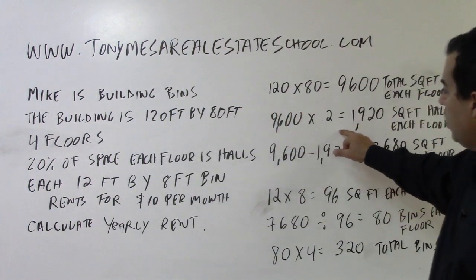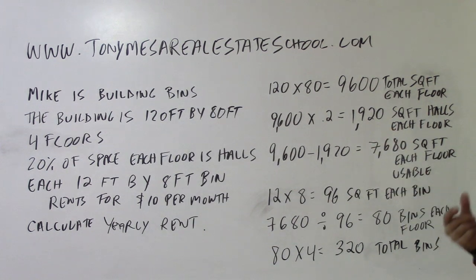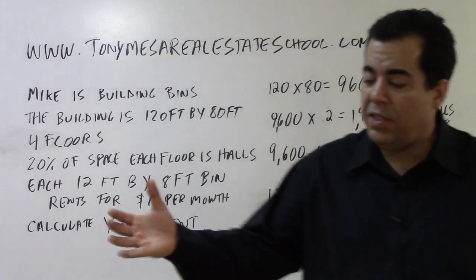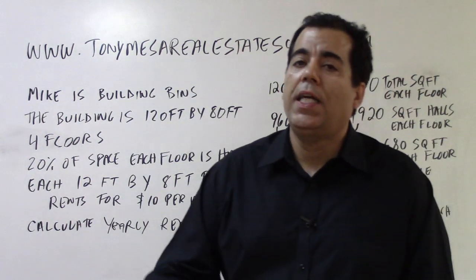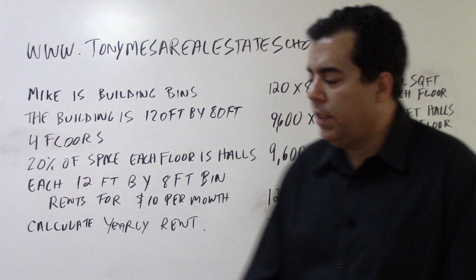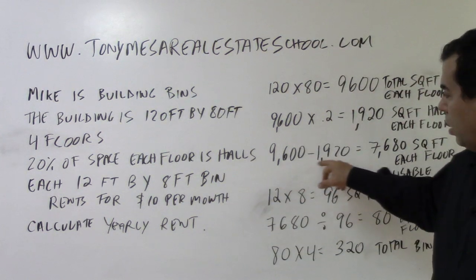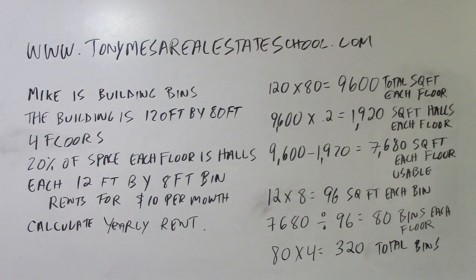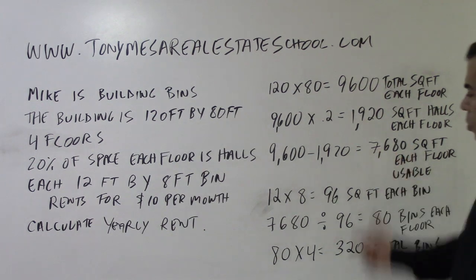9,600 times 0.2 gives us 1,920 square feet. That is how much square footage each floor has in halls — the amount in each floor that is not usable to build the storage bins. The next step: take the total square footage of each floor, 9,600 minus 1,920, and that leaves 7,680 square feet. That is the square footage of each floor that is usable.